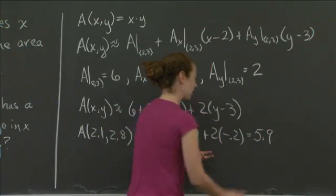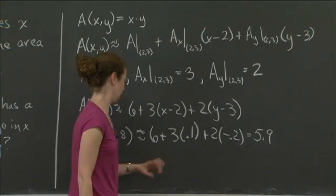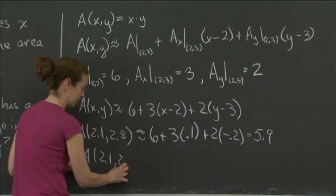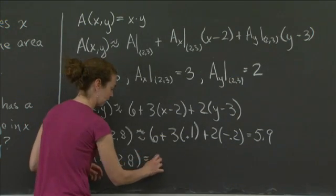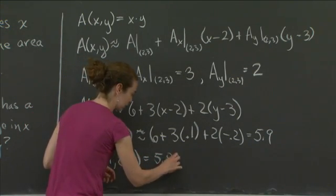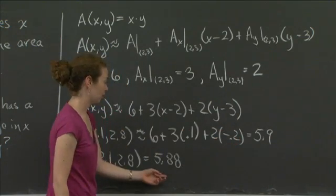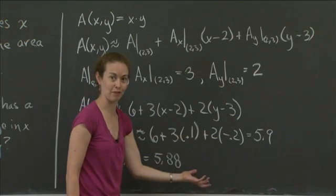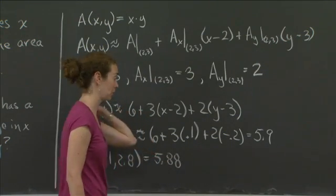So the area based on the approximation is 5.9 square units. And in actuality, if you multiply it out, I think you get something like 5.88. So the approximation is very good. We're close to 2,3, and that is one of the reasons we can know it should be very good. It should be pretty good.